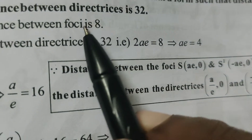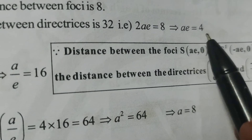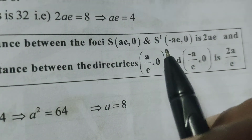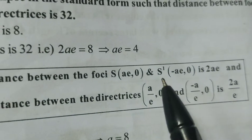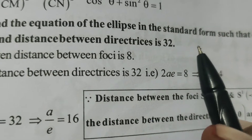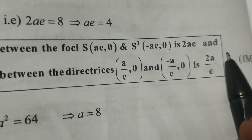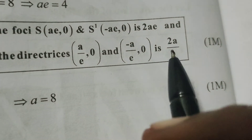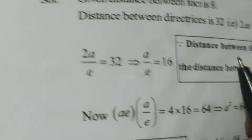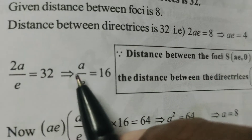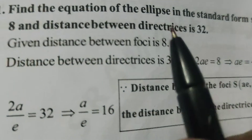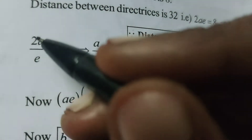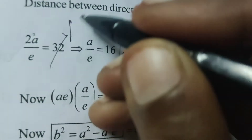Therefore, distance between foci means 2AE equals 8, so AE equals 4. The foci are S(AE, 0) and S'(-AE, 0), so distance between foci is 2AE. Distance between directrices is 2A/E. So 2A/E equals 32, meaning A/E equals 16.